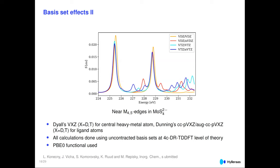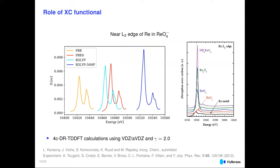Geometry is also not a significant issue; experimental or optimized geometries give comparable results. Looking at the exchange-correlation functional for the rhenium tetroxide complex, there is a much larger dependency on the choice of functional — in particular a strong dependence on whether or not to use exact exchange. PBE with no exact exchange gives a large shift; introducing 20% exact exchange changes things significantly, and 50% exact exchange gives another significant energy change.